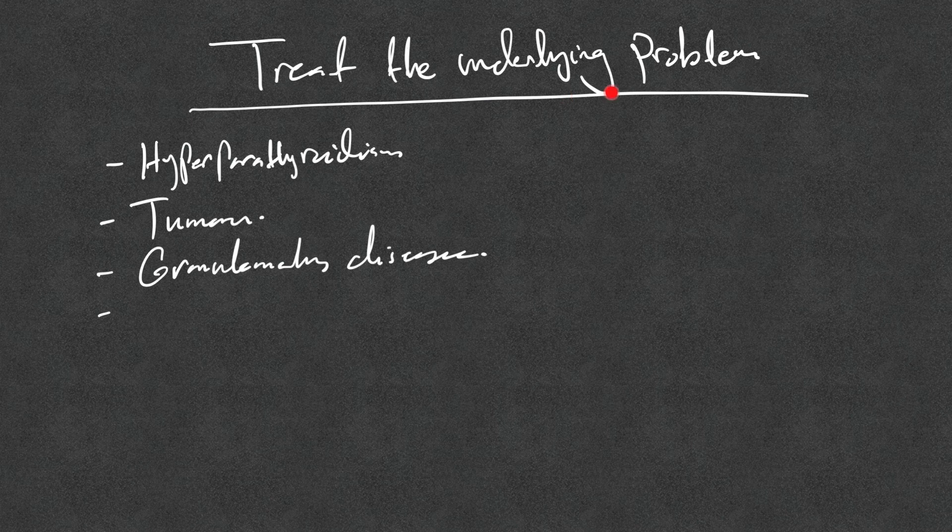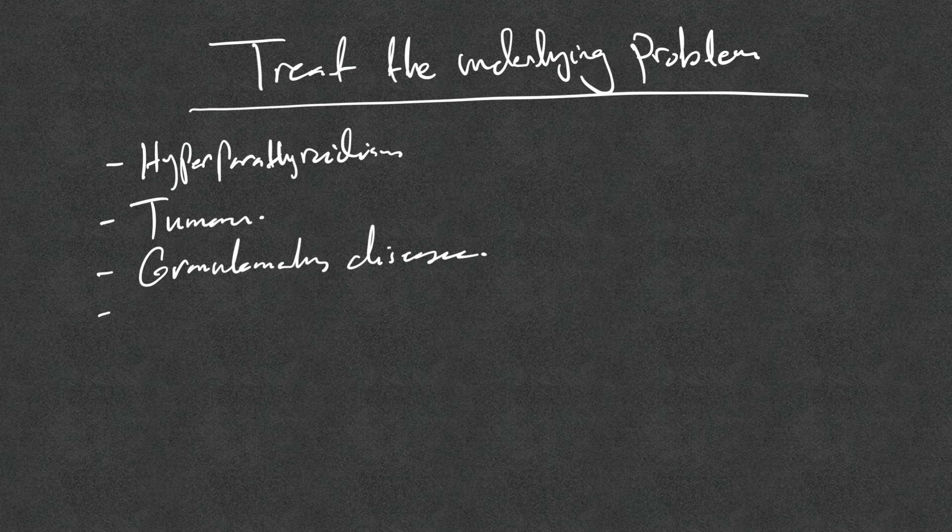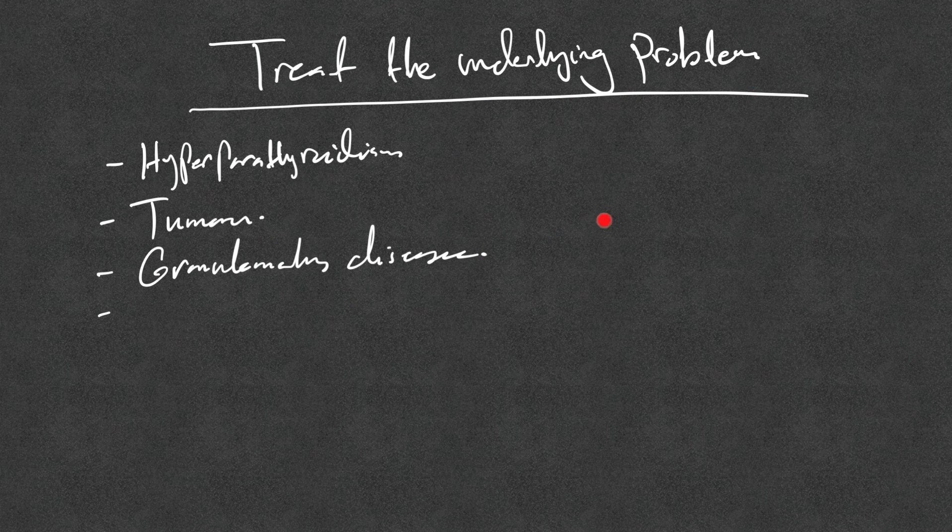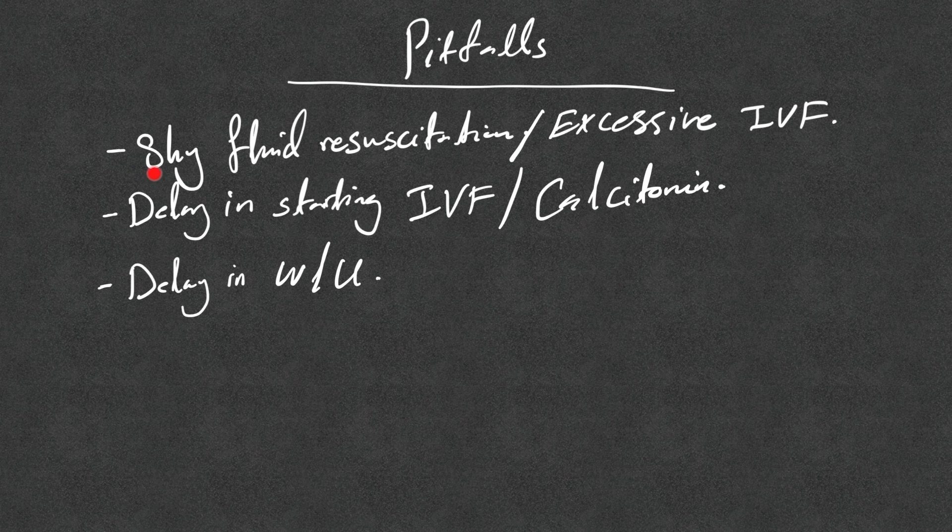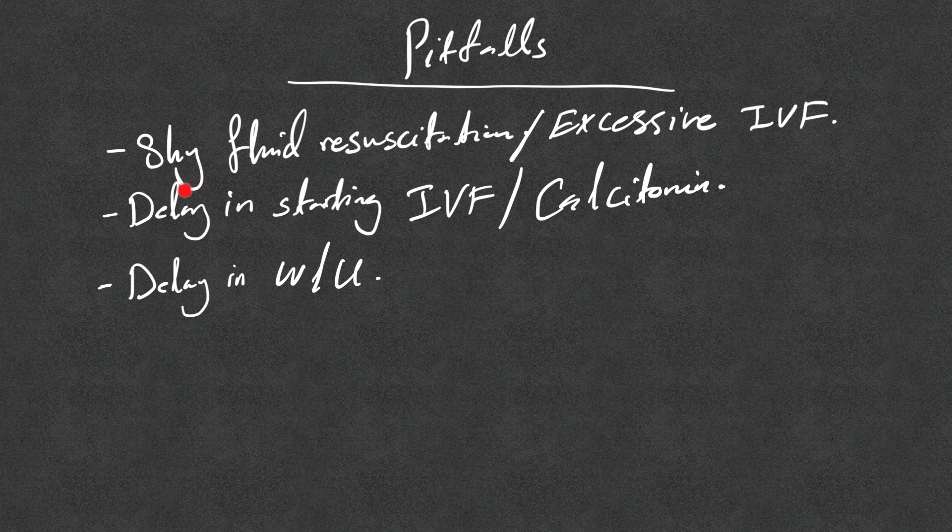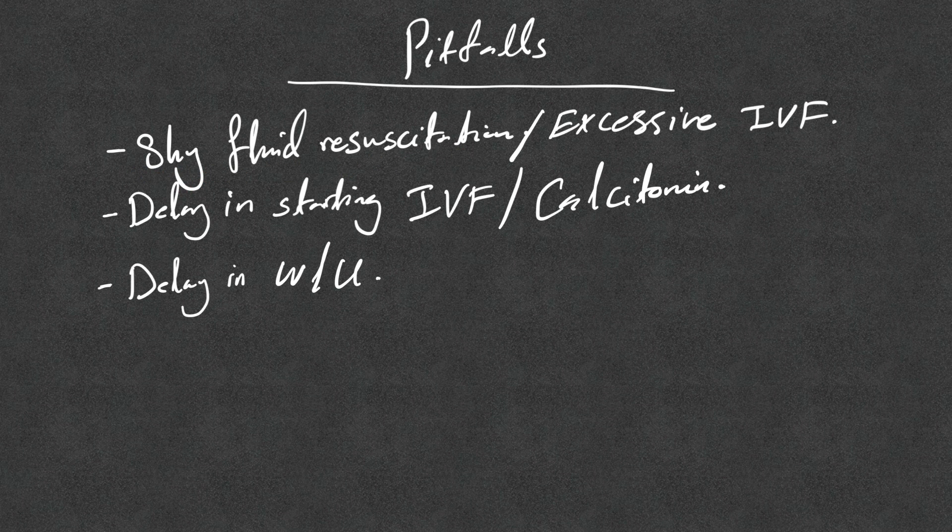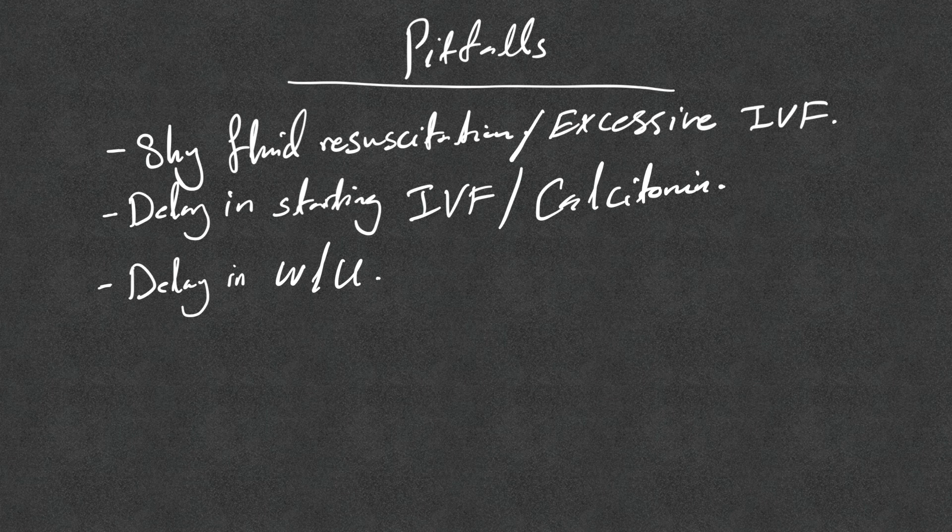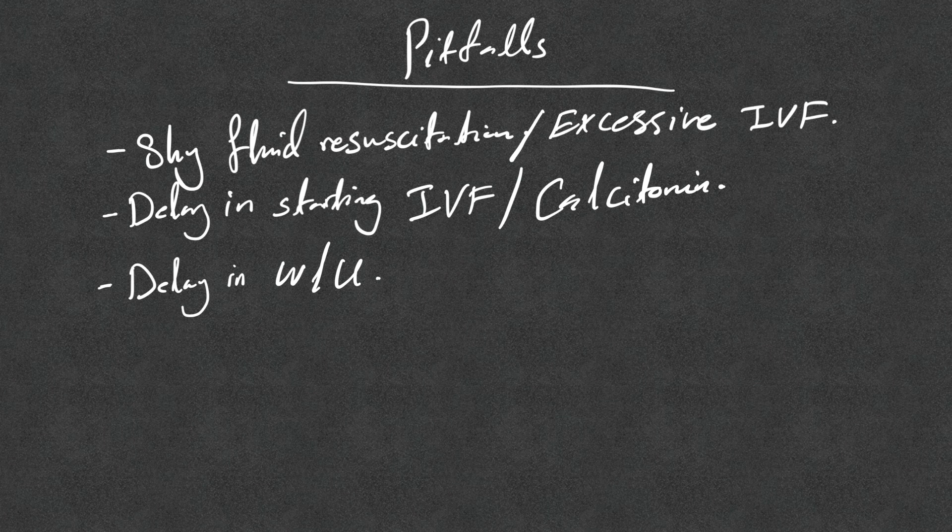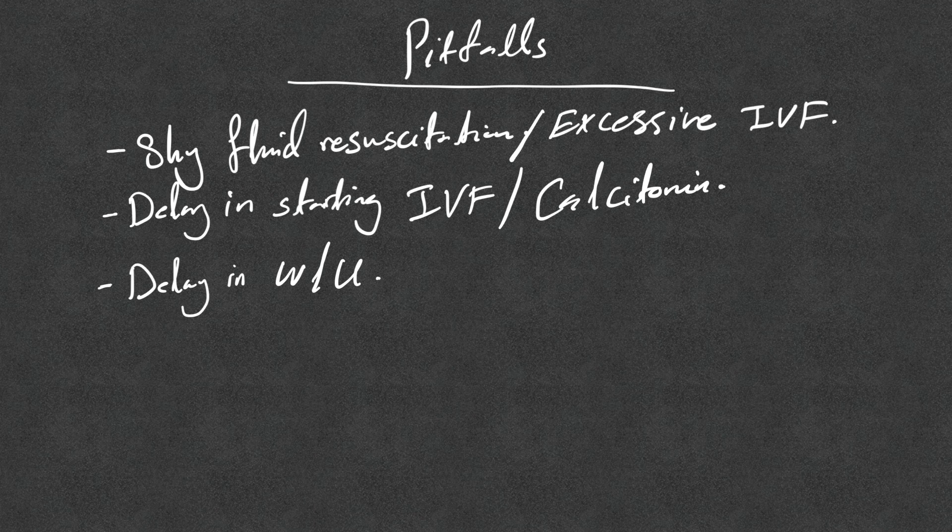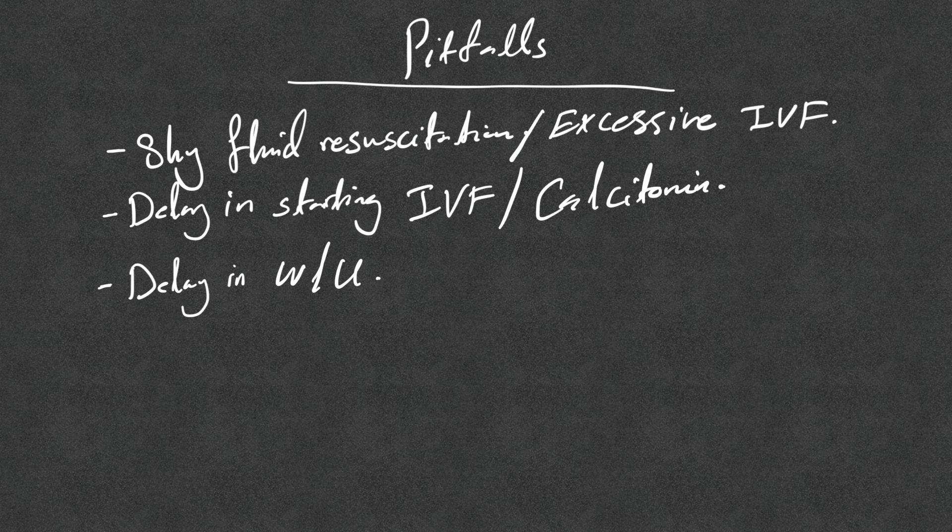Some pitfalls: shy fluid resuscitation. People start fluid at 75 cc an hour, 100 cc an hour. No, you need to be generous. Give 200 to 300 ml per hour. The only contraindication is signs of fluid overload or active pulmonary edema. At that time we give loop diuretics.